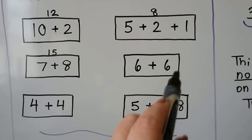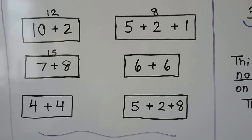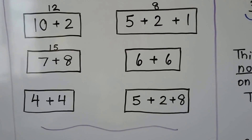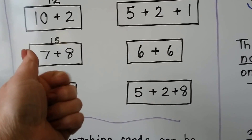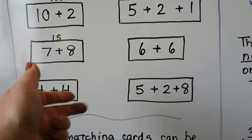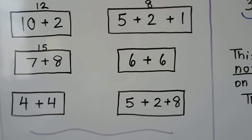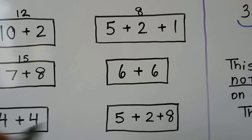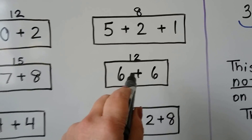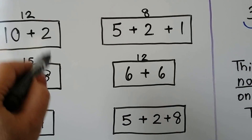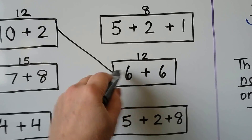6 plus 6 — that's a doubles, isn't it? We have 6 and we can add 6 more: 6, 7, 8, 9, 10, 11, 12. There's our 12. So we know that one's a 12 and that one's a 12, so these match, don't they?